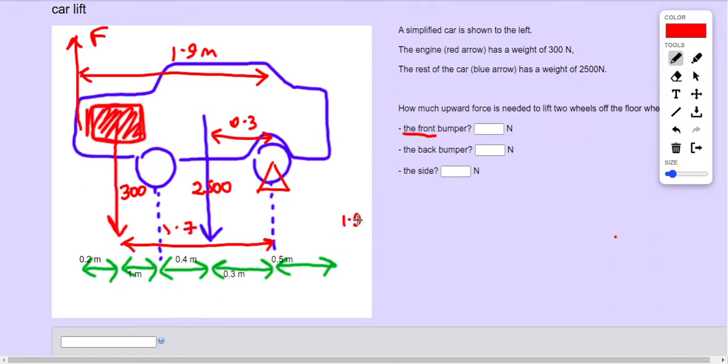So 1.9F is going to equal 300 times 1.7 plus 2,500 times 0.3. Write that one out first.